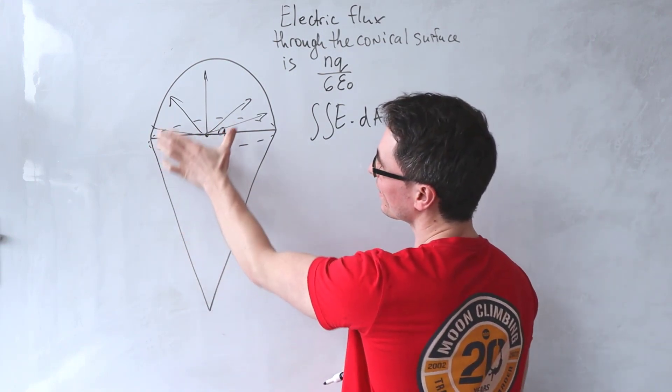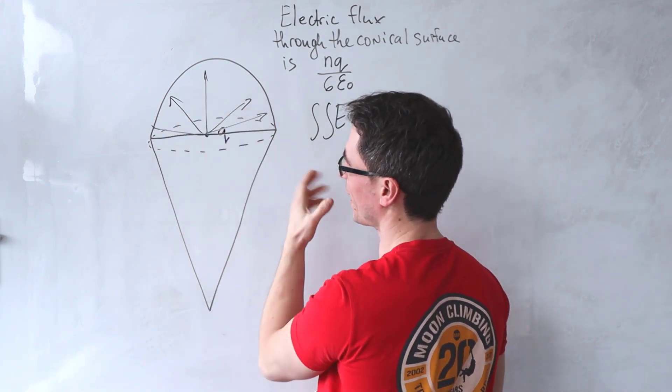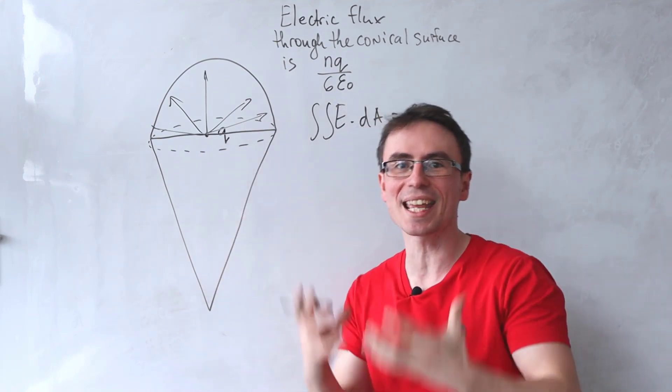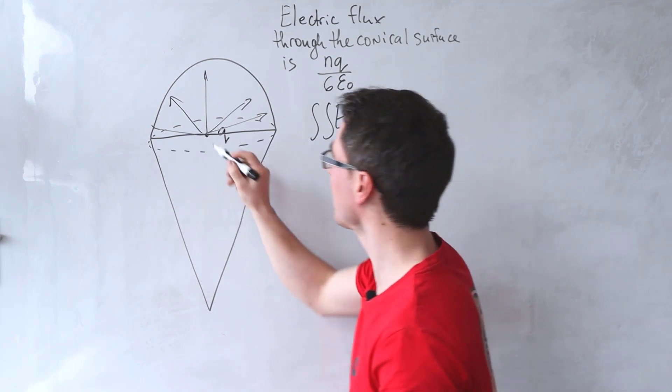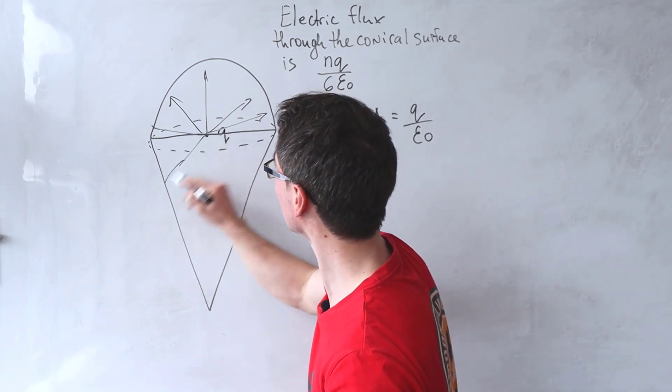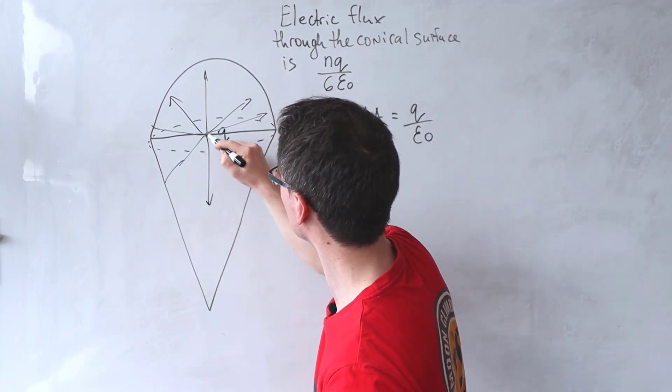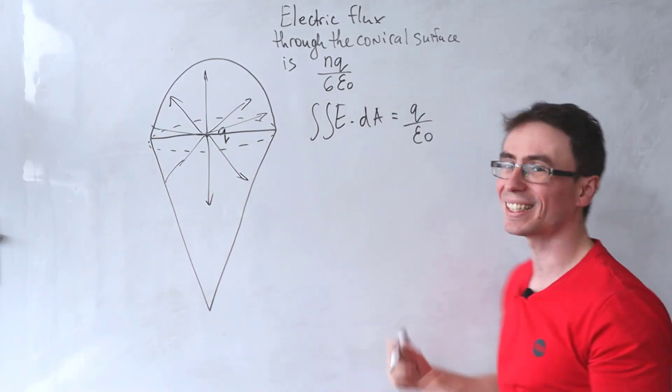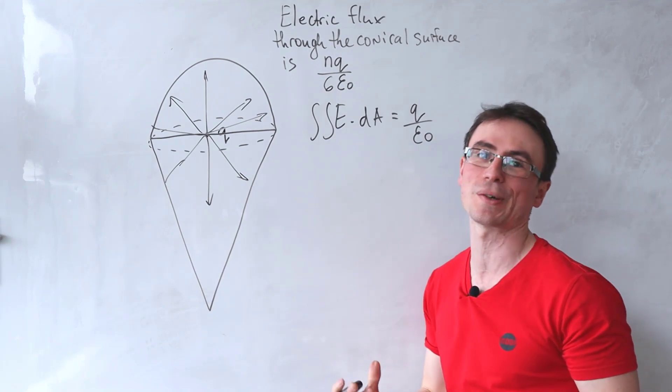The surface above is half a sphere and it's going to contain exactly half of the field lines. The other half of the field lines are going to go through this conical surface, and we're directly given the electrical flux through it.